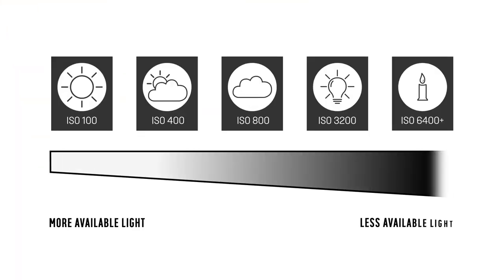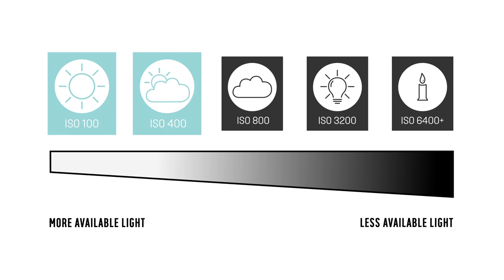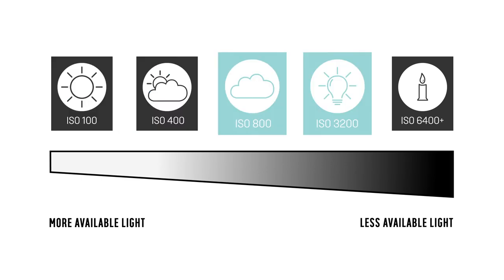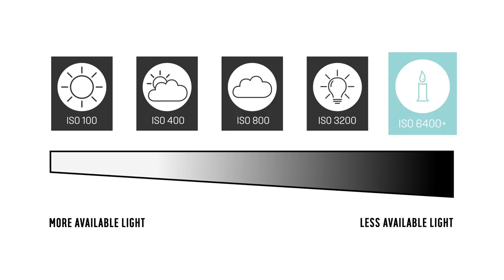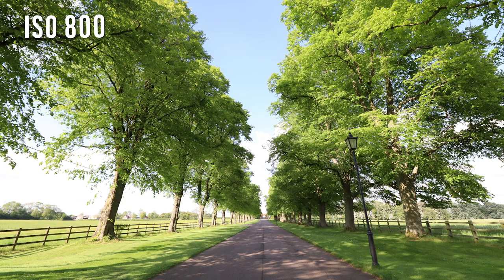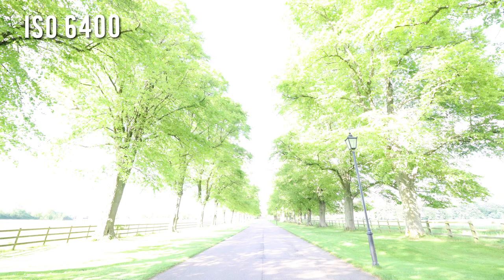The higher the ISO number, the more sensitive the sensor, which then amplifies light capture to give a brighter exposure. A low ISO between 100 and 400 is best used when the surrounding light is bright. A mid ISO between 800 and 3200 comes into play for indoors or when the weather is overcast and the light is poor. A high ISO between 6400 and 51200 is what you'll need for low-light photography, where the sensor is at its most sensitive and will amplify the light to compensate. Ideally, keep the ISO as low as possible for the best image quality, as increasing ISO can introduce more noise or grain compared to lower ISO settings.